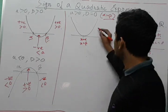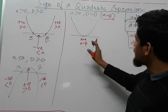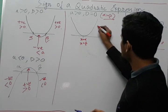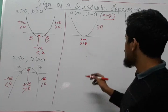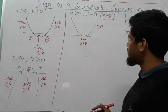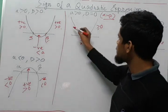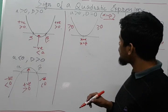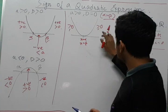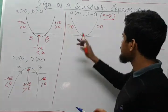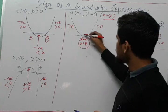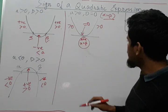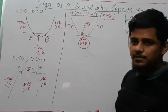So if we take a value of x to the right of alpha or beta, the expression will be greater than or equal to 0, since the curve is moving upward. And if we take a value to the left of alpha and beta, the quadratic expression will again be positive — greater than or equal to 0. The expression will equal 0 only when x is equal to alpha or beta; at that point the expression equals 0. In all other cases, the sign is always positive.